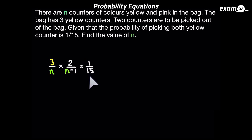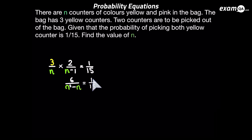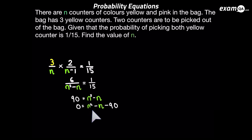In this case there's no cancelling down to be done, so go ahead and multiply these fractions. Three times two makes six, and n times n minus 1 gives us n squared minus n. Again we'll do that cross multiplying — n squared minus n will times the 1, and the 15 will times the 6. This time we've got ourselves a quadratic to solve. As with all quadratics, we need to equal it to zero — move the 90 to the right hand side.